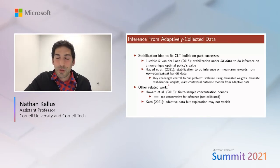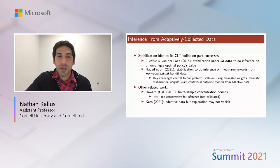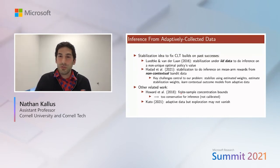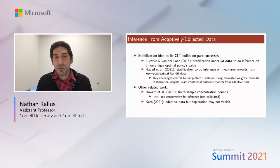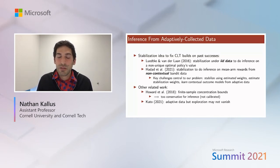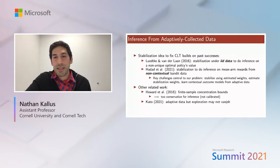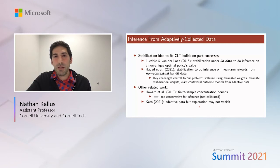Other related work includes Howard et al., who construct finite-sample concentration bounds for confidence intervals, but because they're based on concentration bounds they're too conservative and not calibrated — if we want 95% coverage we always over-cover. More recently, Cato looked at calibrated inference but does not allow exploration to vanish towards zero, and correspondingly the method is simpler.